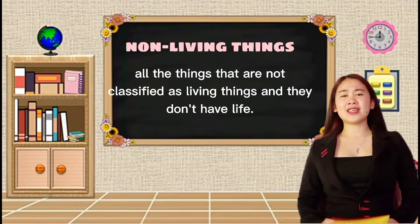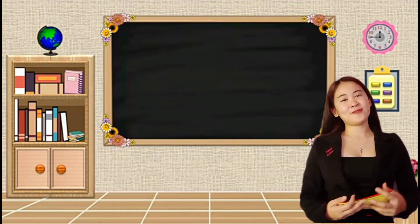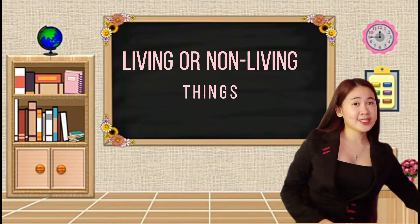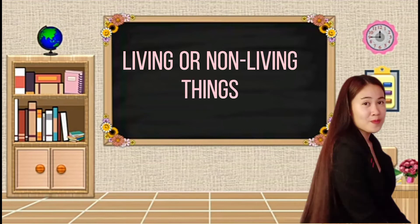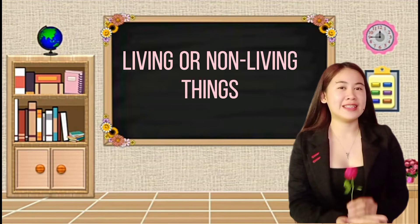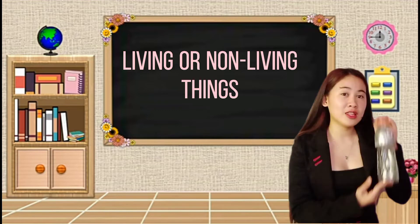So, all you have to do is to identify the things that I am holding. If it is living or non-living things. Okay, let's start. So, what is this thing? A flower. Very good. It is living or non-living? It is living things. Very good. So, how about this? A water bottle. It is living or non-living? It is non-living.